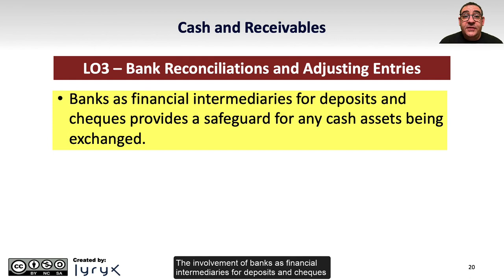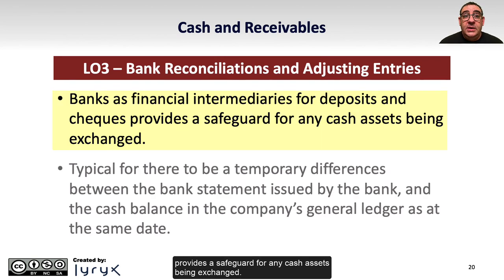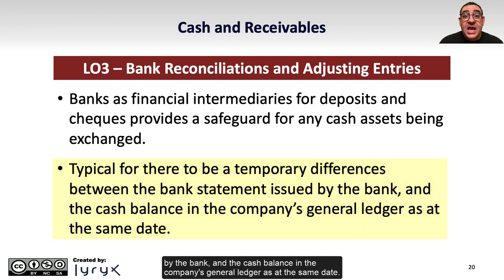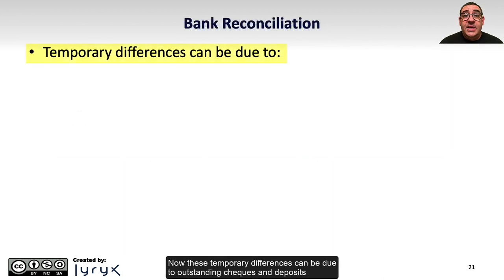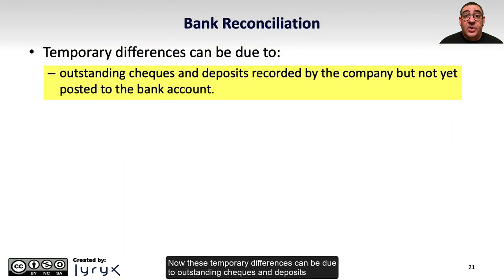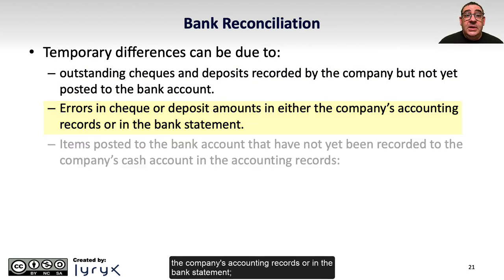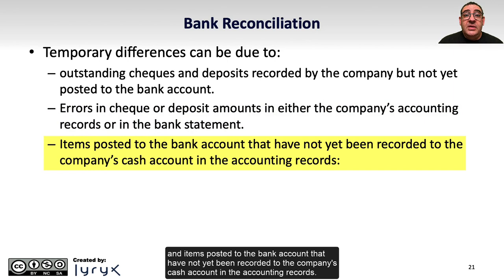The involvement of banks as financial intermediaries for deposits and checks provides a safeguard for cash assets being exchanged. It's typical for there to be temporary differences between the bank statement issued monthly by the bank and the cash balance in the company's general ledger as at the same date. These temporary differences can be due to outstanding checks and deposits recorded by the company but not yet posted to the bank account, or errors in check or deposit amounts in either the company's accounting records or the bank statement, and items posted to the bank account that have not yet been recorded to the company's cash account in the accounting records.